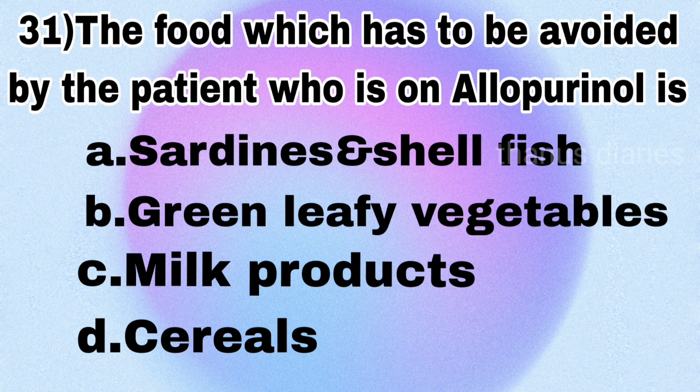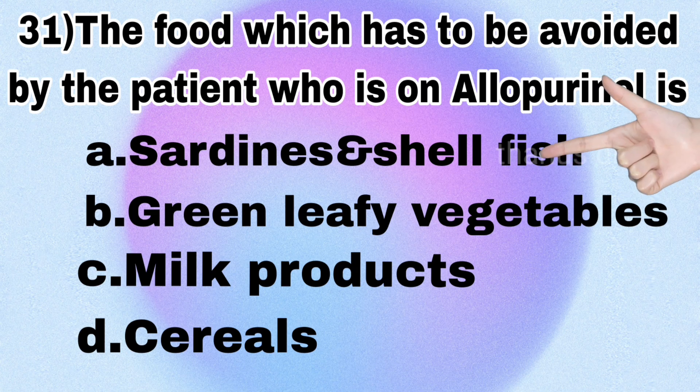Next question: the food which has to be avoided by a patient who is on allopurinol — sardines and shellfish, green leafy vegetables, milk products, or cereals? It's sardines and shellfish.